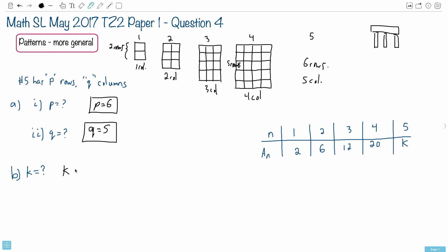So if we really want to keep it generic, we can say k equals the number of rows times the number of columns, which in this case, we said p was 6 and q was 5. So that means 6 times 5 is just 30.